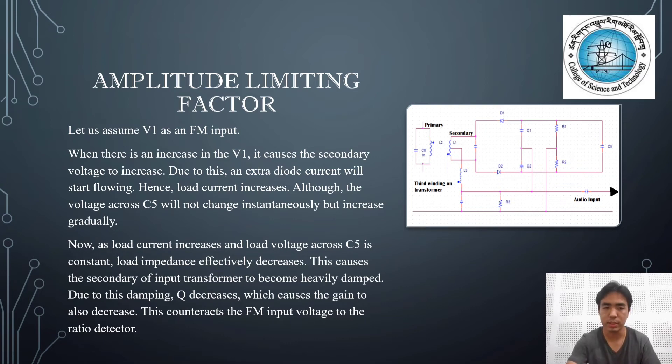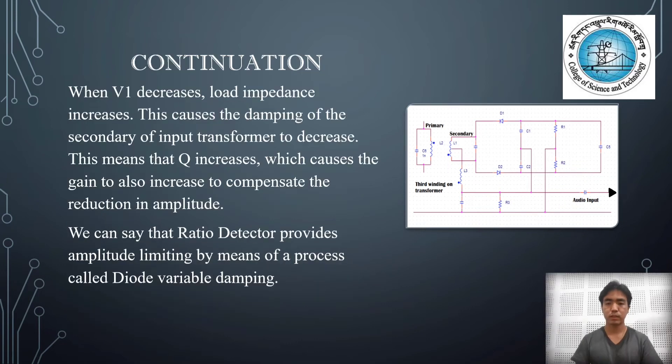This counteracts the FM input voltage to the ratio detector. Similarly, when V1 decreases, load impedance increases. This causes the damping of the secondary input transformer to decrease. From that, we can understand that Q increases, which causes the gain to also increase to compensate the reduction in amplitude. From this logic, we can assume that the ratio detector provides amplitude limiting by means of a process called diode variable damping.